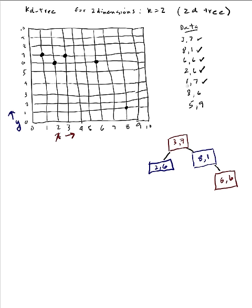Next I have (1,7), shown here on the grid. To insert it: I compare 1 against 3 — 1 is less than 3, so I go to the left. Then I compare 7 against 6 — 7 is greater than 6, so I go to the right. I'm at leaf level, so I insert (1,7) right here.